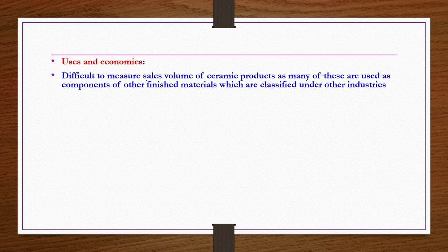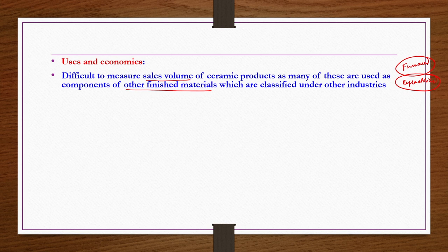Discussing uses, applications, and economics of the ceramic industry: it is very difficult to measure the sales volume of ceramic products because many are used as components of other finished materials classified under other industries. For example, furnaces — manufacturing furnaces does not come under ceramic industries, but the refractories used for making those furnaces are produced by the ceramic industry. From the end-use perspective, they fall under some other industry.